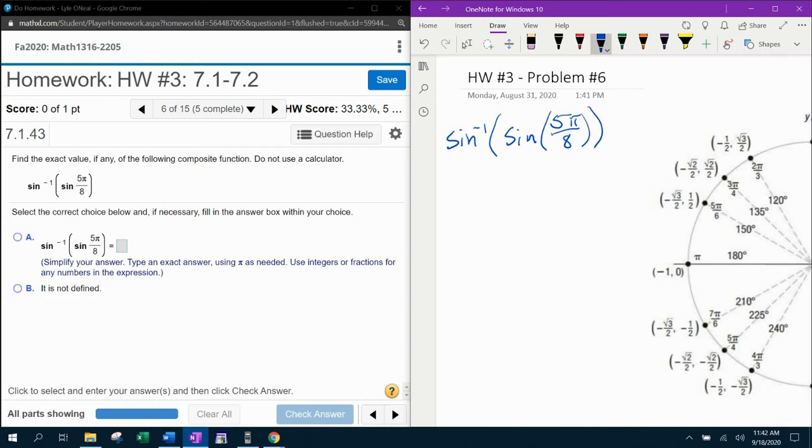We know that if you take the inverse sine of the sine of an angle, if you're taking the composition of a trig function with its inverse trig function, those are going to cancel. And this angle will be the answer as long as it's within the acceptable range of values.